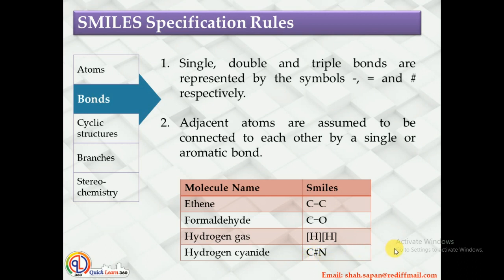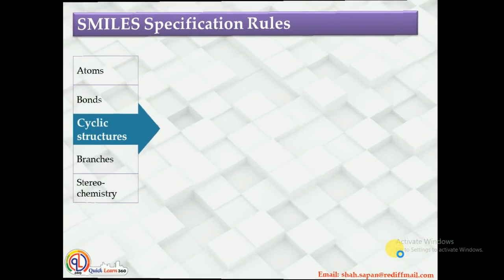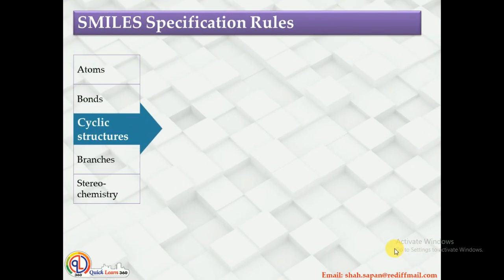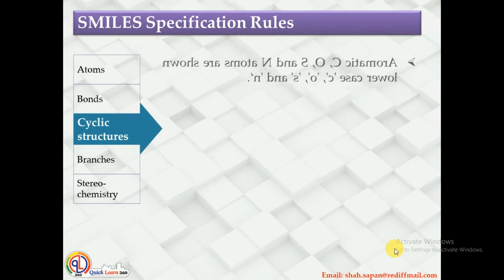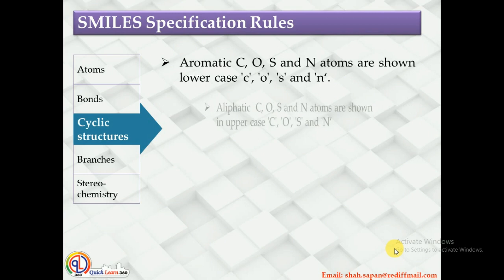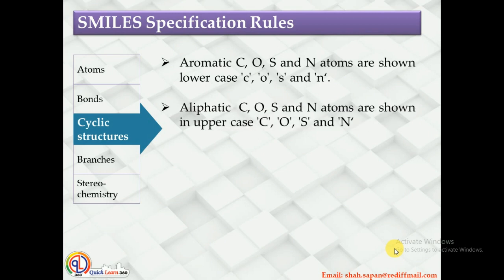Now let us look at representing cyclic structures with SMILES specification rules. There are two types of cyclic structures: aliphatic and aromatic. In case of aliphatic compounds, all carbon, oxygen, sulfur, and nitrogen atoms are represented in uppercase.